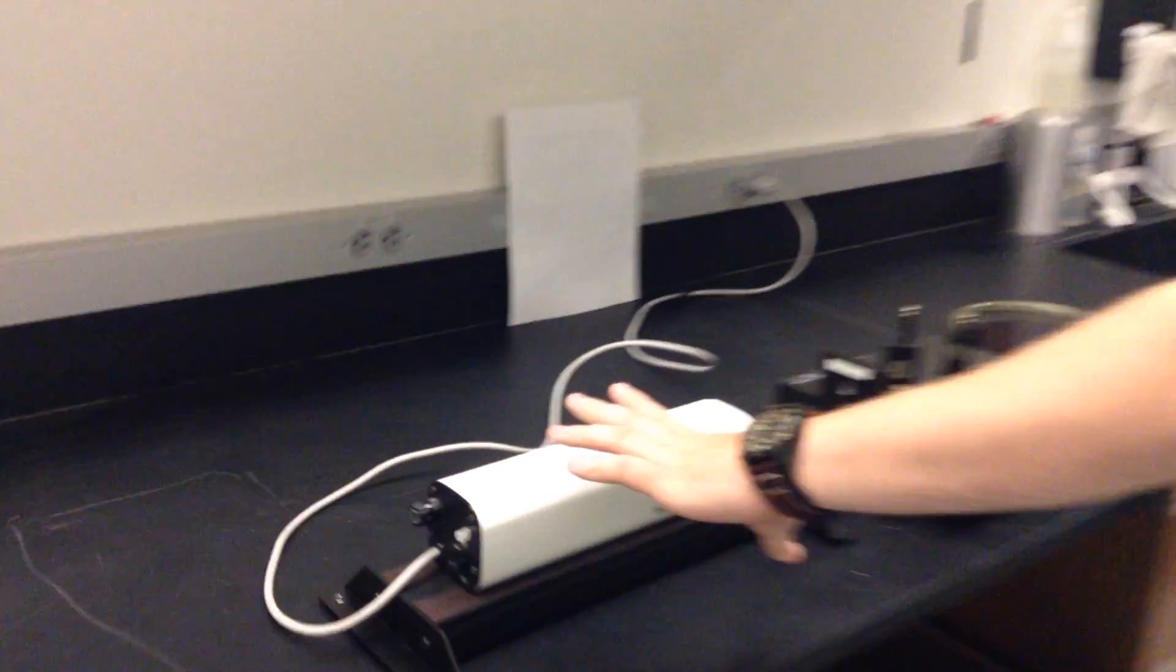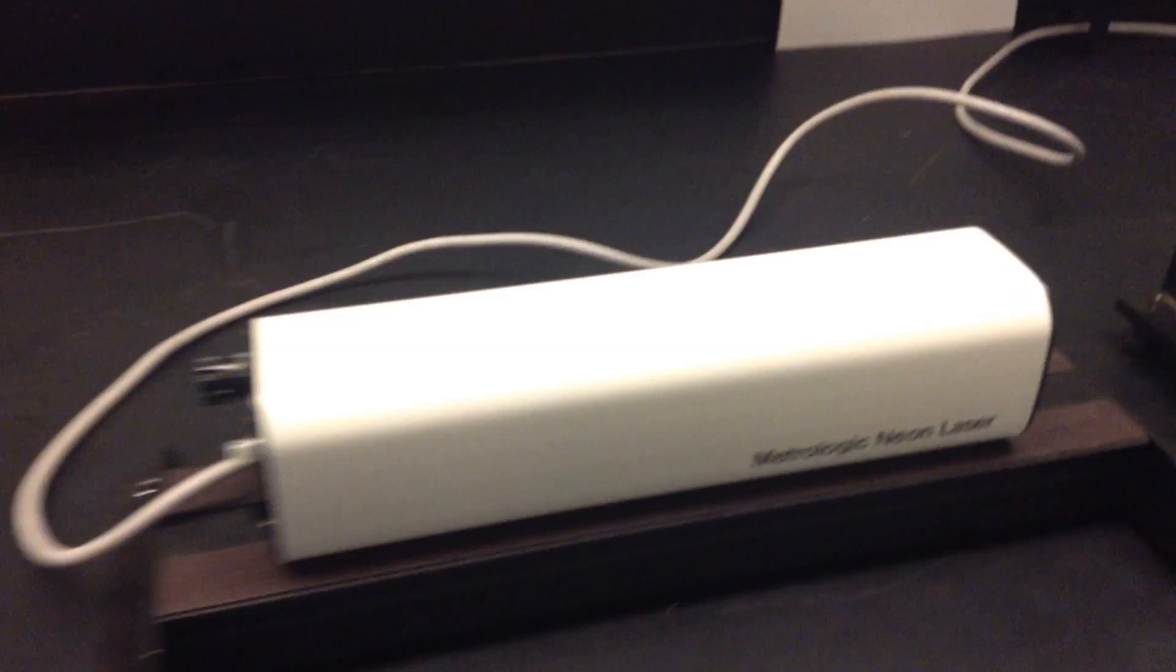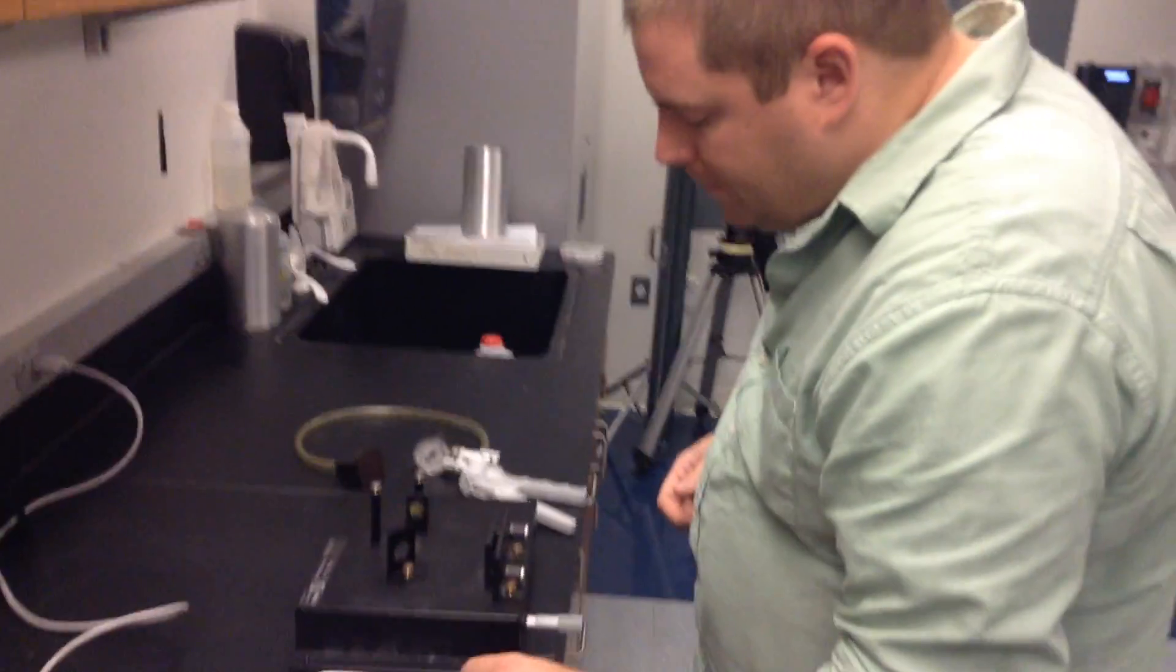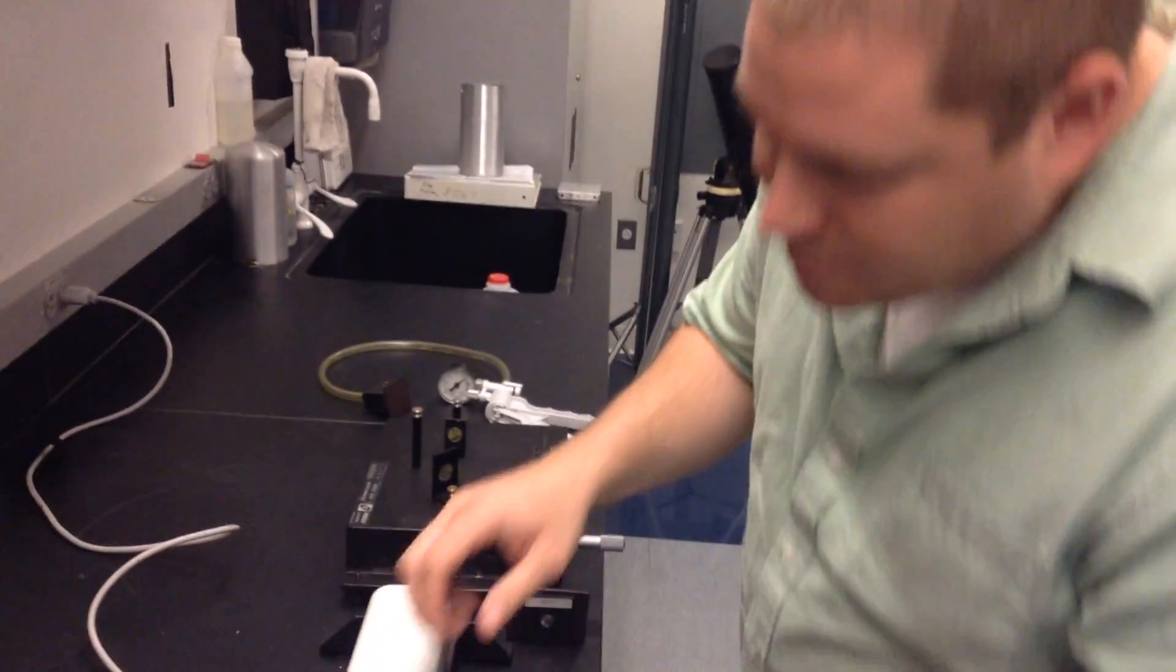So we have our laser here. This is a gas laser that's going to emit a 632.8 nanometer colored red light. Now what we're going to do is we're going to send that light into a beam splitter. So let me turn this on now.